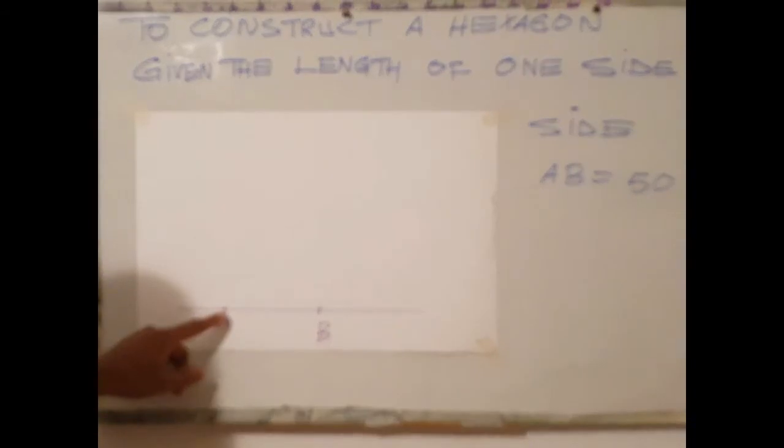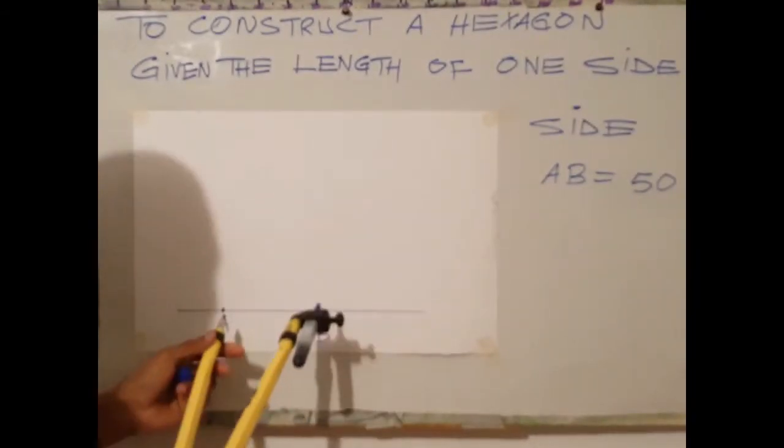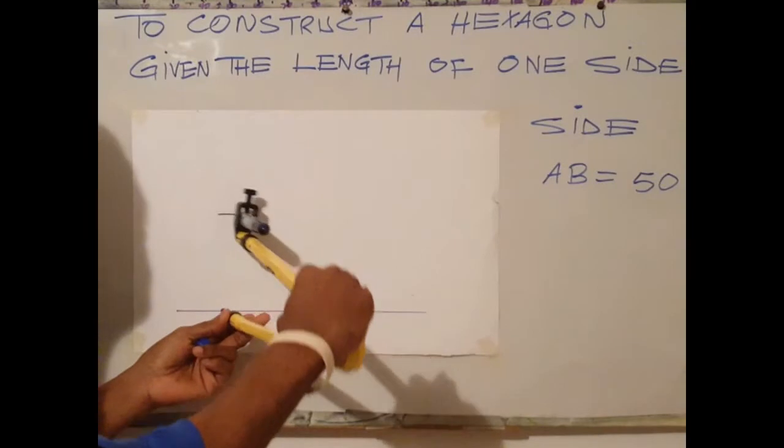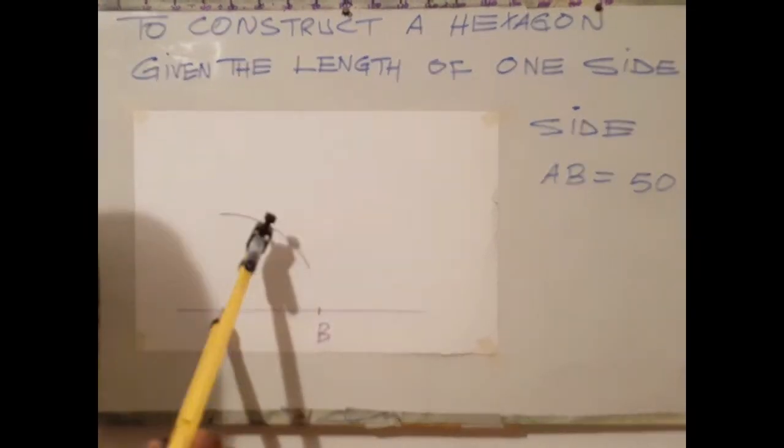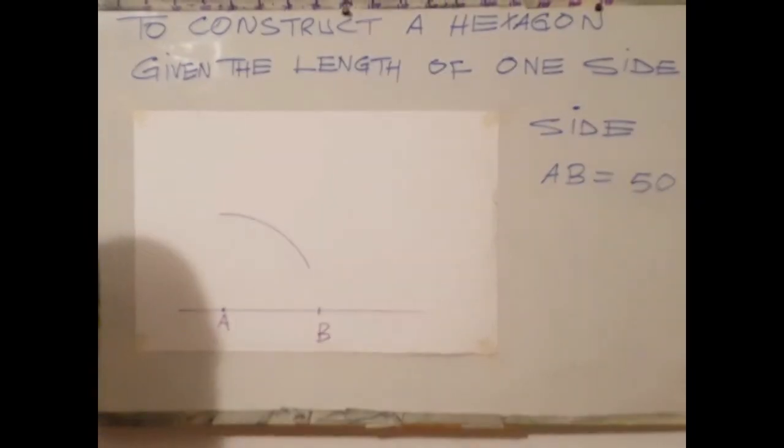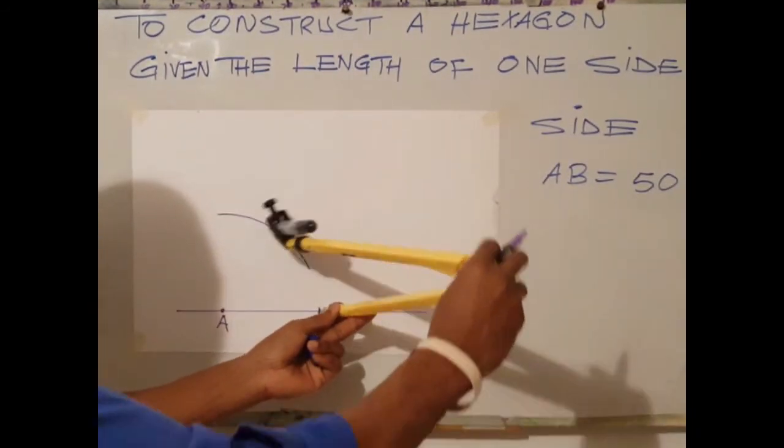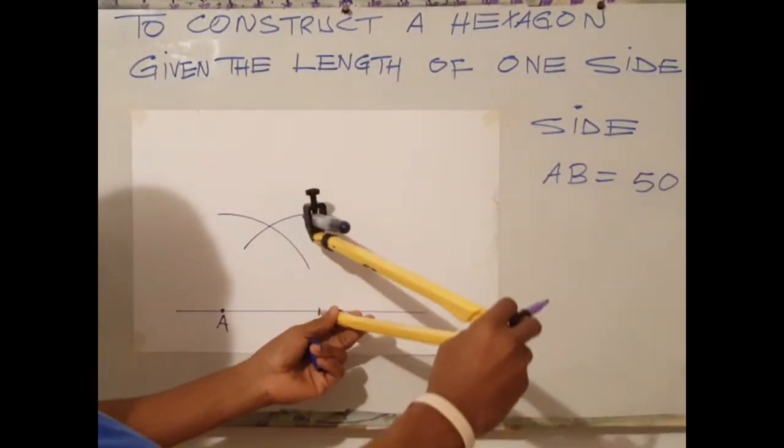With A as center, radius AB, scribe an arc above line AB. Using that same radius with B as center, scribe an arc, intersecting the one that you have drawn before.